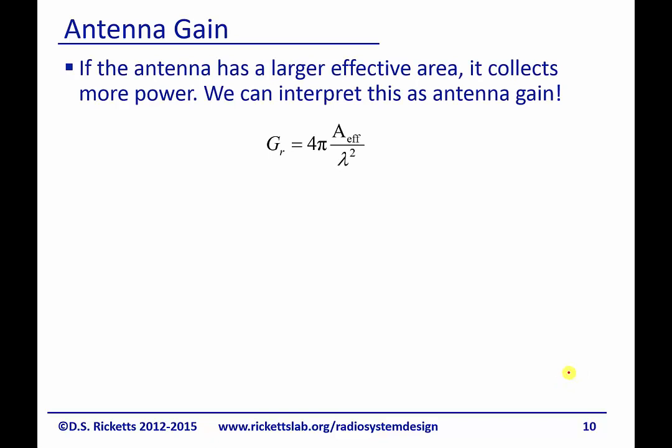Now, if the antenna has a larger effective area or aperture, it collects more power. I think that's pretty intuitive. And so we can interpret this as gain. And so we define the gain of our receiving antenna as the effective area or aperture times 4 pi over lambda squared. And if you hold on a second, I'll explain where this lambda squared comes from.